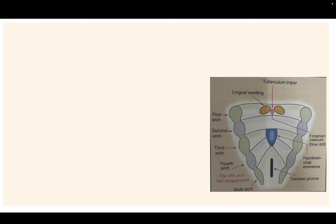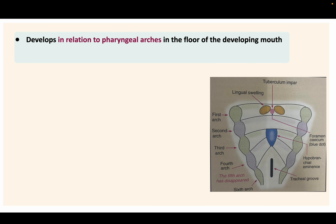You are aware of this diagram showing the pharyngeal arches. There are five arches, but the fifth arch disappears, and we are left with the first, second, third, fourth, and sixth arches only.